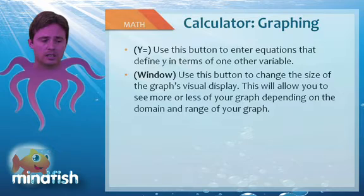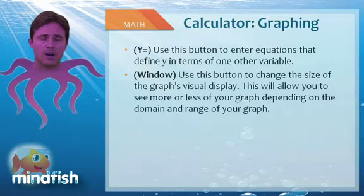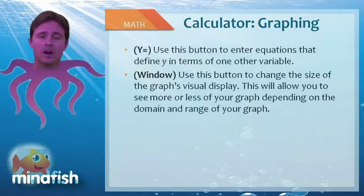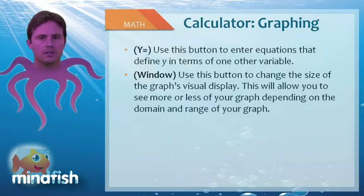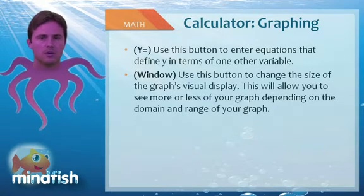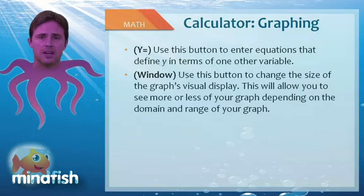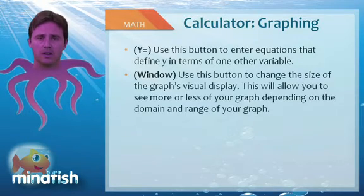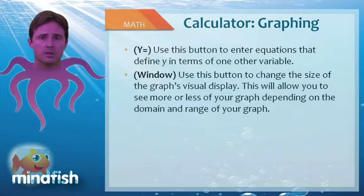The Window button allows you to change the size of the graph's visual display. This will allow you to see more or less of your graph depending on the domain and range of your graph. If you graph something and it looks really funny, odds are your window is off. Normally I would set your window to negative 10, 10, and 1, meaning that everything would be seen from negative 10 to 10 and the increments would be 1. Sometimes you might need to scale up or down, and often times you could use the zoom functions to do that.